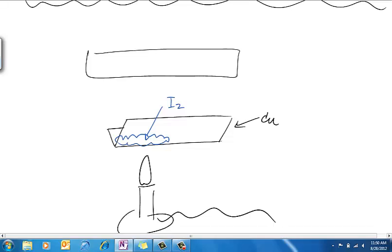That's my Bunsen burner, in case you were wondering. Give it a little color. So as you heat it, what's going to happen is that some of this iodide is going to react with the copper. And you're going to form, on the surface of the copper, a copper iodide.